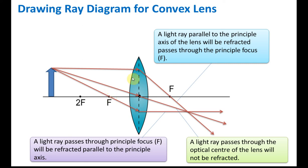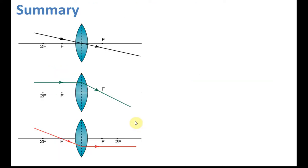Rule number three: for every lens there are two principal foci, one to the right and one to the left. A light ray that passes through the principal focus of a lens will be refracted parallel to the principal axis. So a light ray passing through the principal focus F will be refracted parallel to the principal axis.